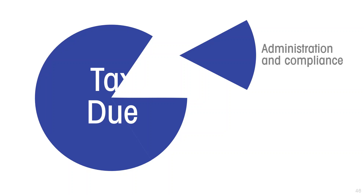It has to have staff who are checking how much tax is due from each individual, checking the tax remitted to see that it equals the tax that is due, and processing refunds or sending out bills for any extra amount if the two don't line up. The administration of the tax has a cost, and that uses up some of the revenue.